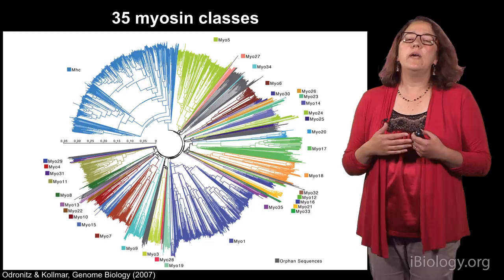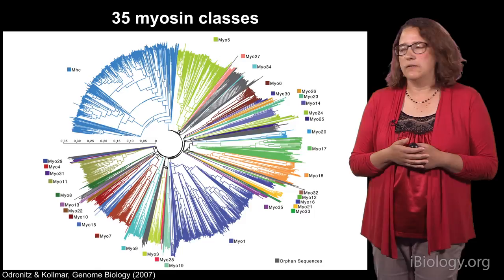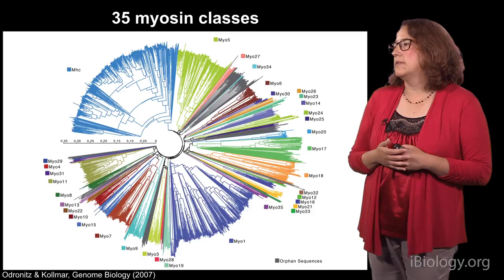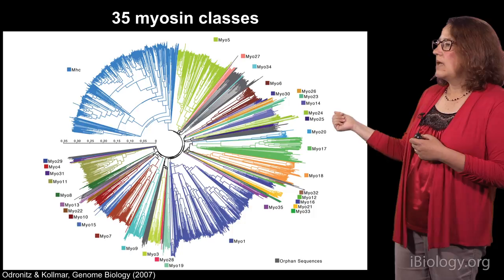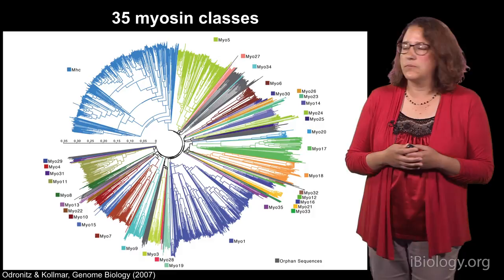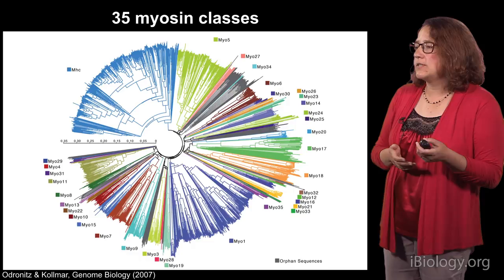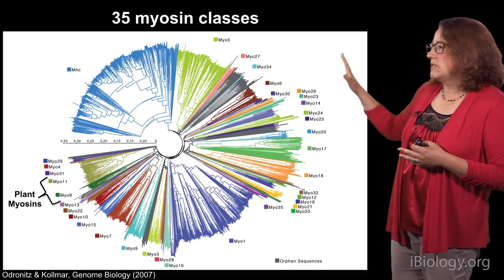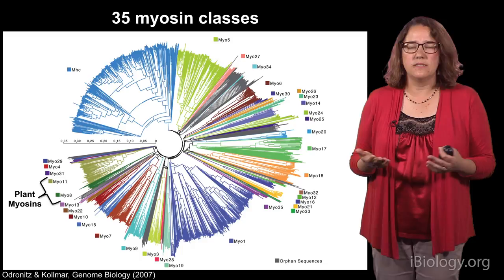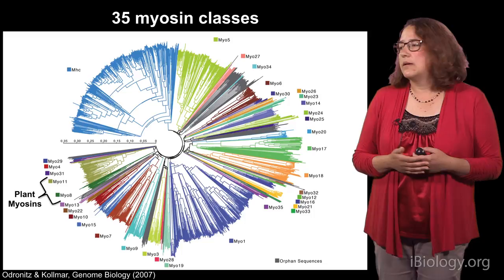We got a window into this problem by analyzing a molecular motor that walks on actin filaments. Myosins are molecular motors that bind to and walk along actin filaments, and they're a very large, diverse family of molecules. This is a phylogenetic tree of myosins based on their motor domains in eukaryotes, showing at least 35 myosin classes. What's really interesting is that plants only have two classes of myosins: a class 8 and a class 11 myosin, without the vast diversity found in other organisms like humans.